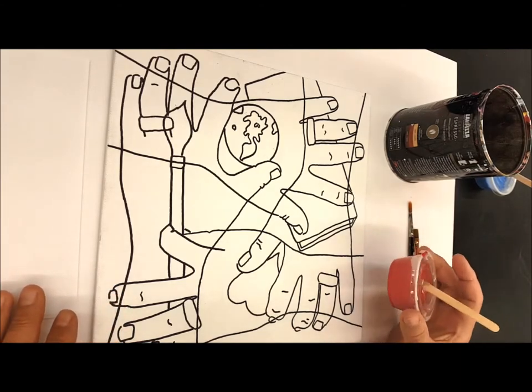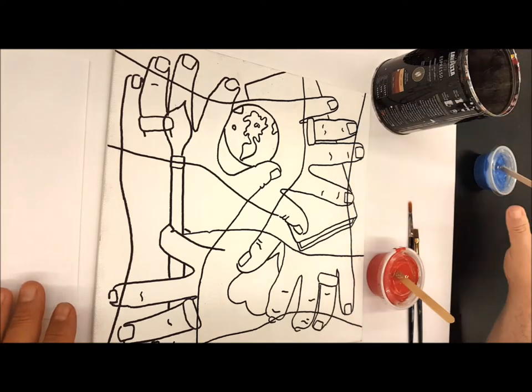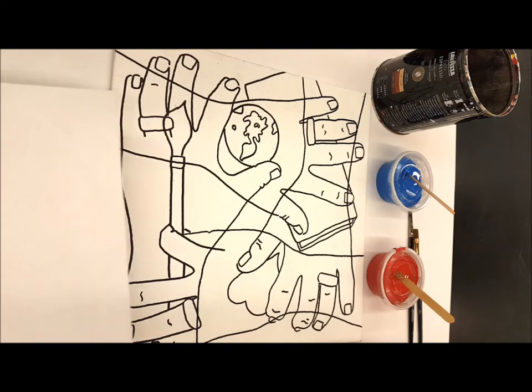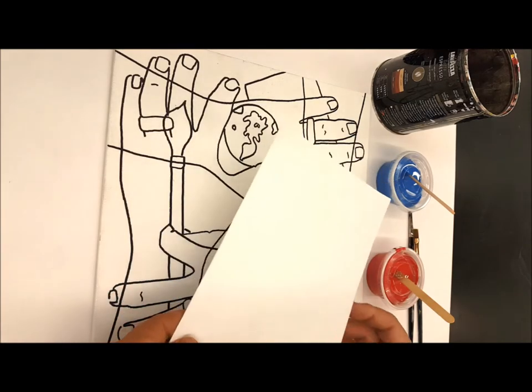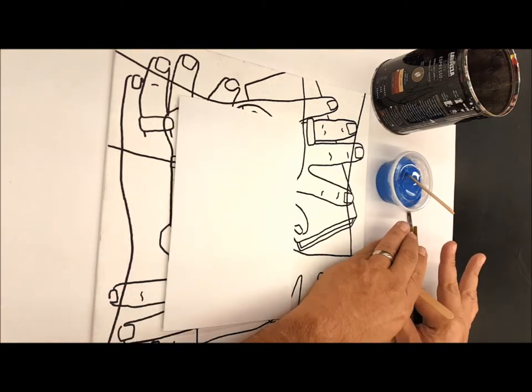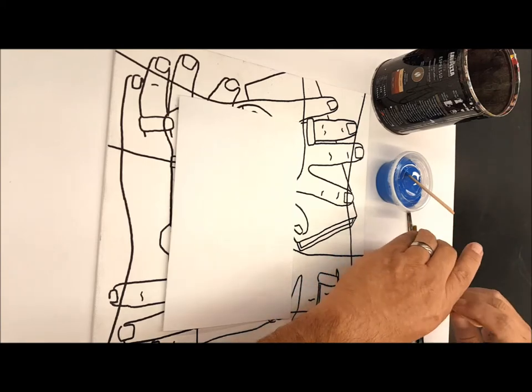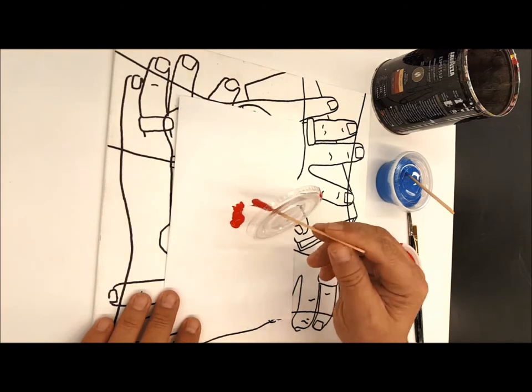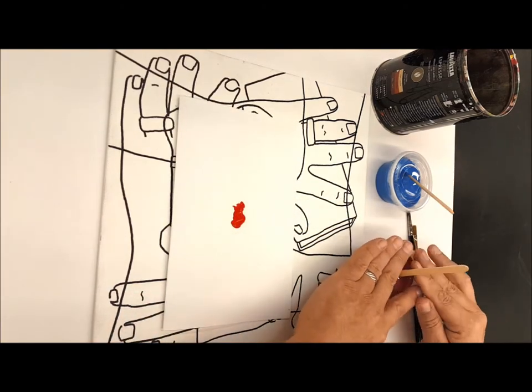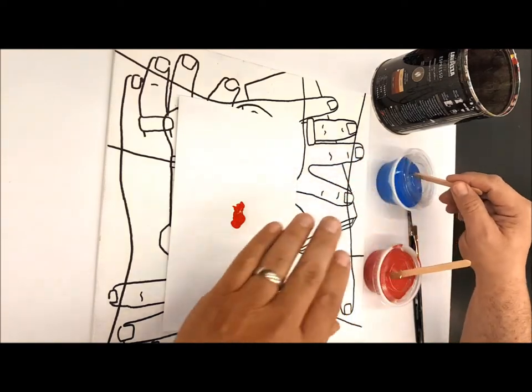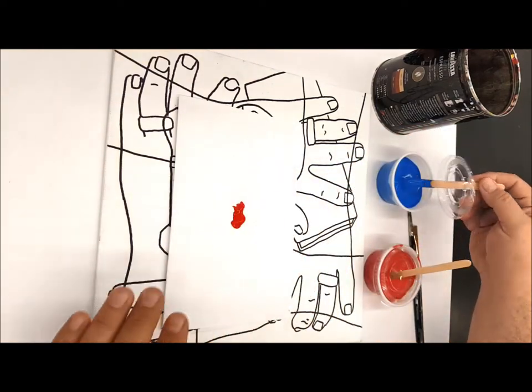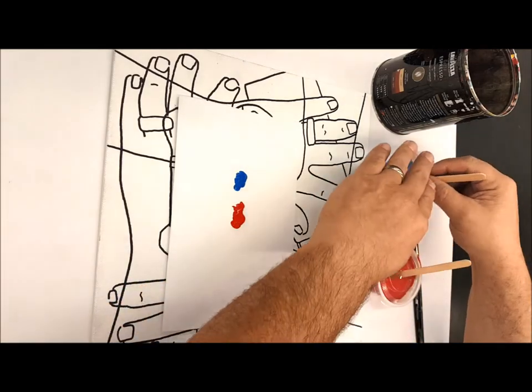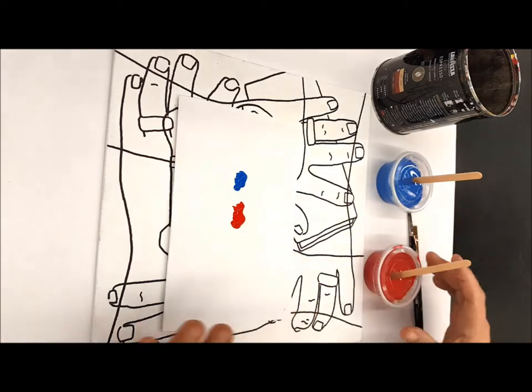We have a couple methods of working with paint that I want to show you that are acceptable in this classroom. One of them is if you're going to mix colors, you could get a little scrap of copy paper, just kind of fold it in half, and I've set up the paint to have these little popsicle sticks in them. So you can just scoop a little, dab it on the paper, and then if you know you need a purple, you would go ahead and grab a little bit of blue, a little bit of red, and then you can mix on the paper if you need to. And that way the paints stay clean.